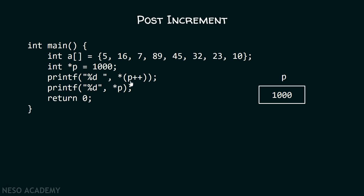Now, with the help of this printf function, I want to print the value of star P++. This is post increment. We know that if we increment the value of P by one, the pointer will simply move one position in the forward direction. But post increment means first the value will be assigned and then it will get incremented. We can see here the pointer P contains 1000 address. Therefore, 1000 will first get assigned and then the increment will happen. Dereferencing star 1000 means we will get the value 5. Therefore, it will get replaced by 5, and then the pointer will get incremented, which means the pointer will now point to this particular location.